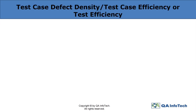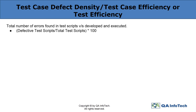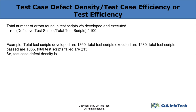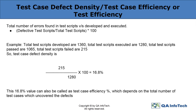Test case defect density refers to the total defect count divided by the size of the release or the total test scripts executed, multiplied by 100. With the instance mentioned here, one can easily evaluate the defect density or test case efficiency, implying the number of test cases that helped in uncovering the defects.